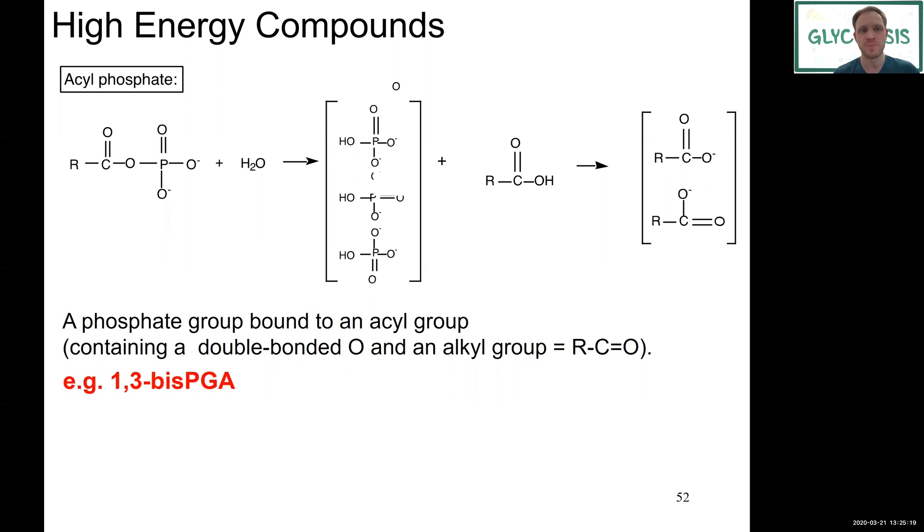If you look up here, we have our double bonded oxygen bound to an alkyl group here. This can be any kind of rest, any kind of other molecule, and is esterified to your phosphoryl group—an acyl phosphate. And acyl phosphates are high energy compounds. One of the examples we will see today in glycolysis is 1,3-bisPGA, a very important intermediate in making ATP through glycolysis.